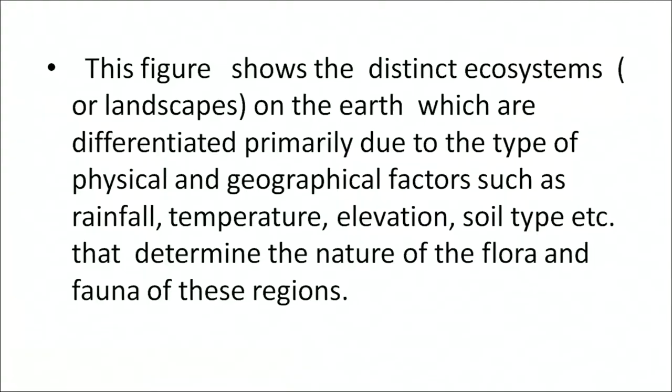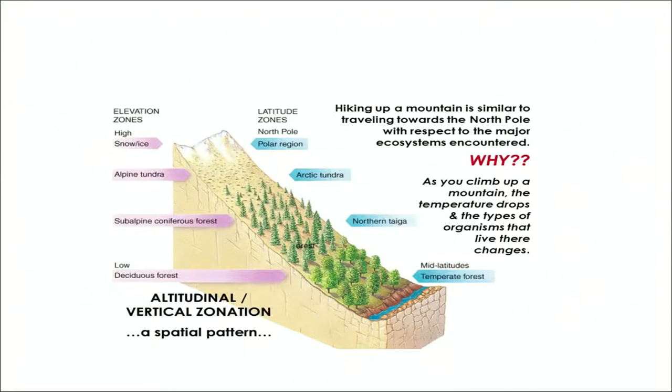The various landscapes on the earth are differentiated primarily due to the type of physical and geographical factors such as rainfall, temperature, elevation and soil type, which determine the nature of the fauna and flora of these regions. This figure familiarizes you with the latitudinal and altitudinal similarity in the variation of plants at different latitudes and altitudes. The latitudinal and altitudinal variations of vegetation vary accordingly.